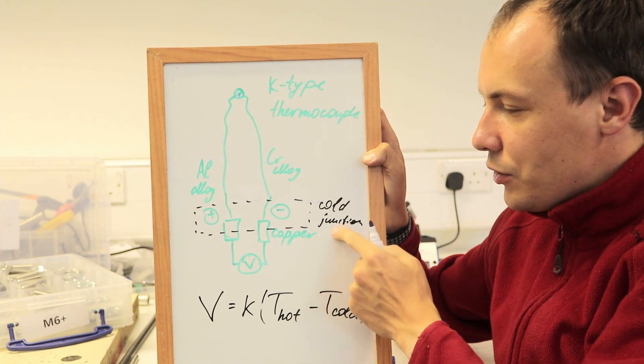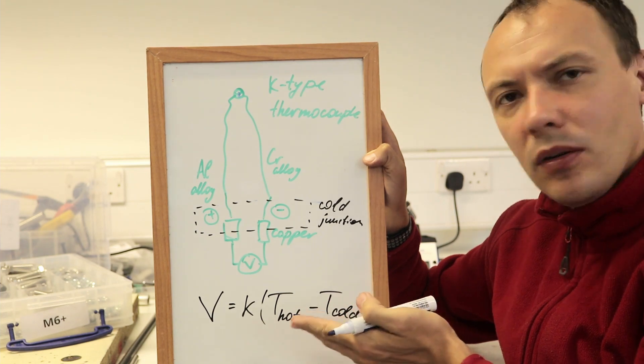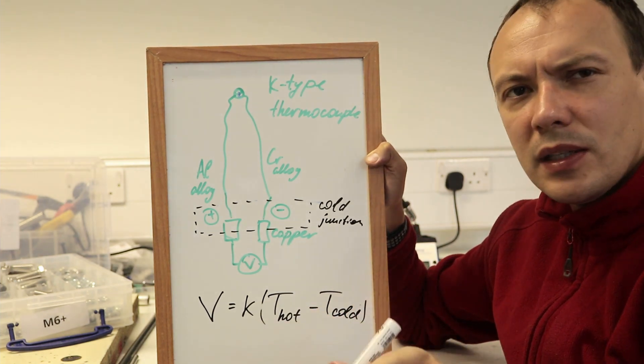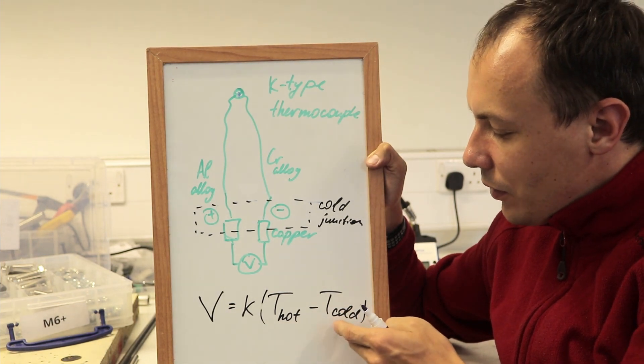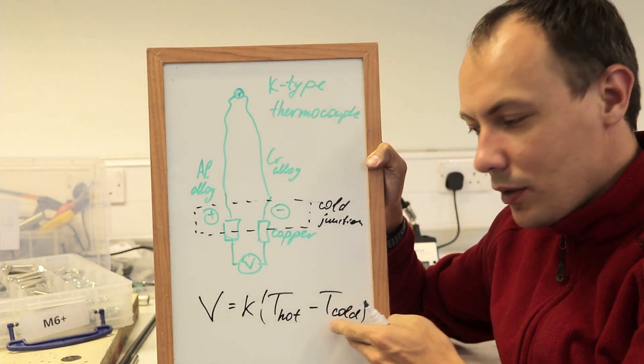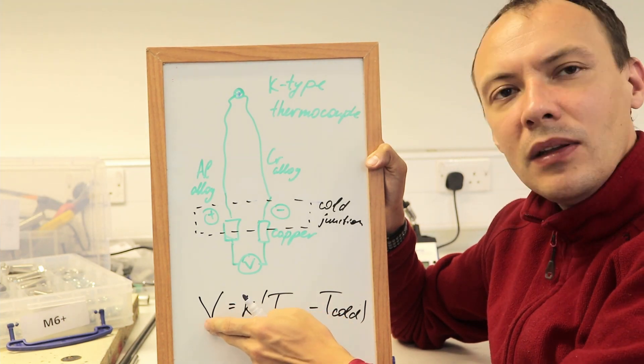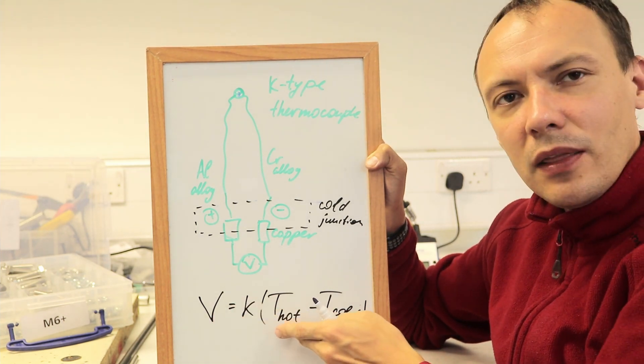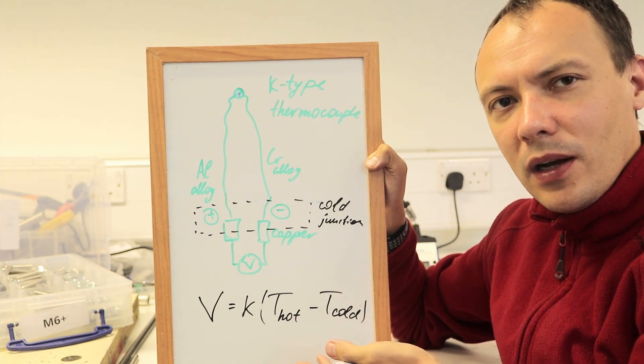And if we know the temperature of the cold junction—we typically measure it using some other method, some semiconductor, or just assume it's 20 degrees or 21 degrees—if we know the temperature of the cold junction, if we know what sort of metals, what sort of coefficients, then knowing the voltage, we can calculate the hot temperature. And that's the basic how all these thermocouples work.